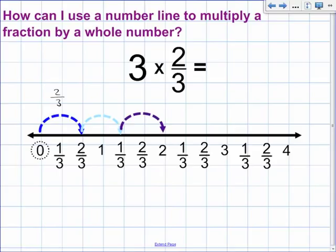So this first jump is a jump of two-thirds. The second jump is another jump of two-thirds. And this last jump is another jump of two-thirds. So two-thirds plus two-thirds plus two-thirds will give us our answer, which in this case is two.